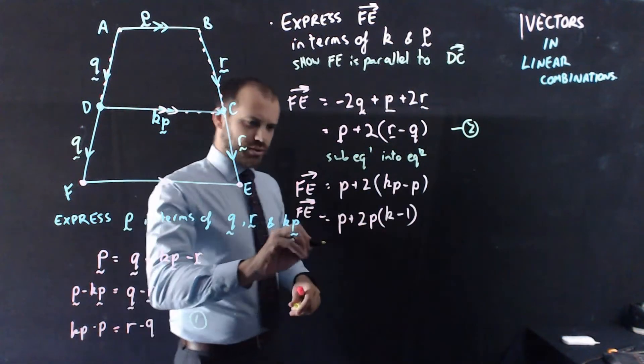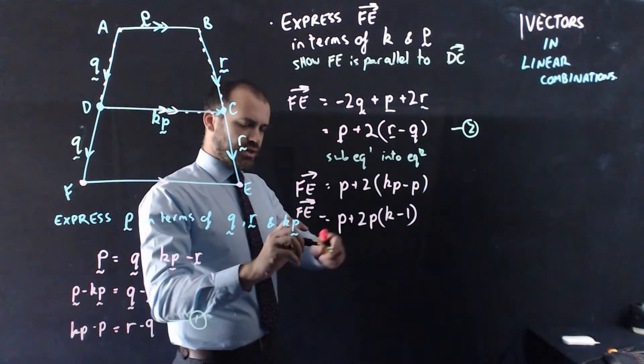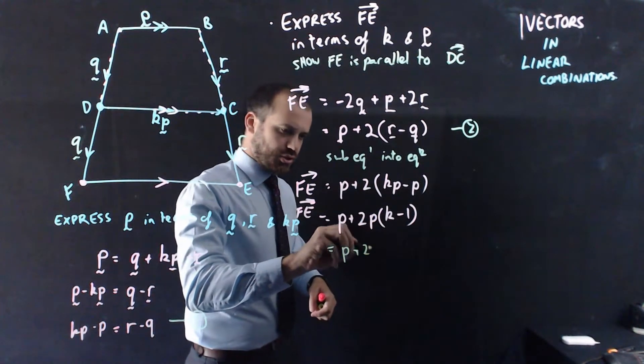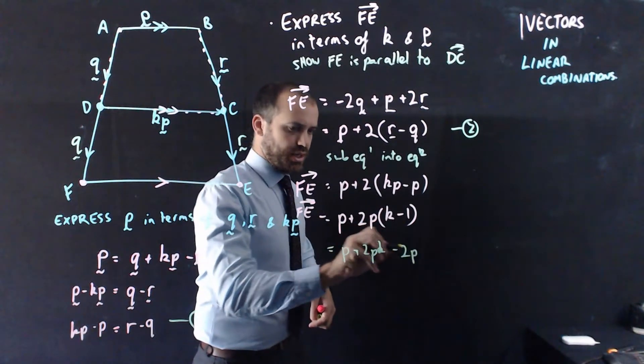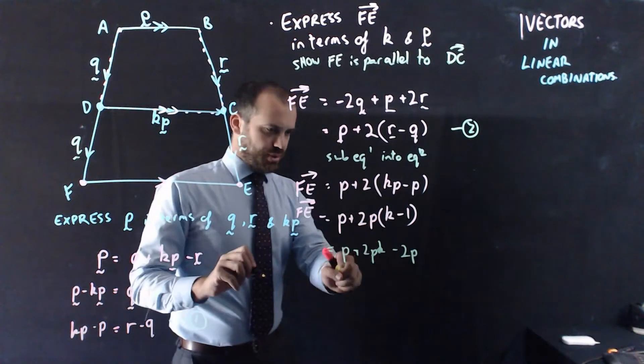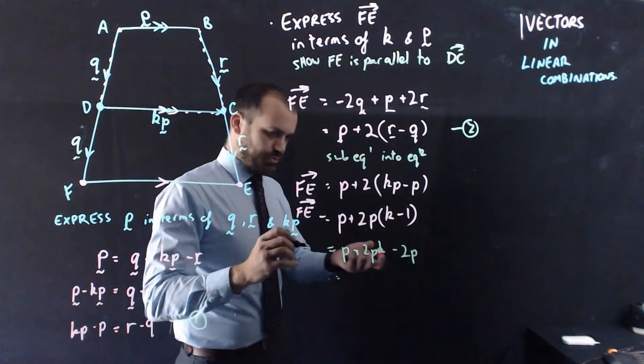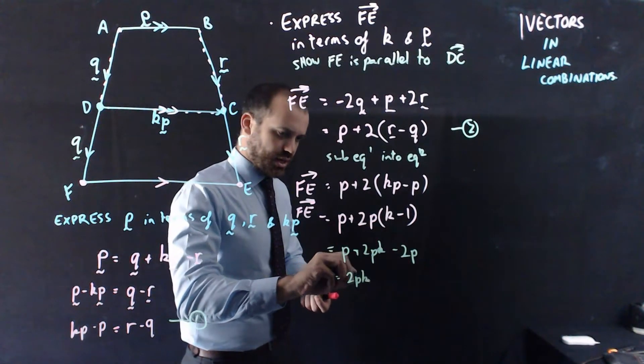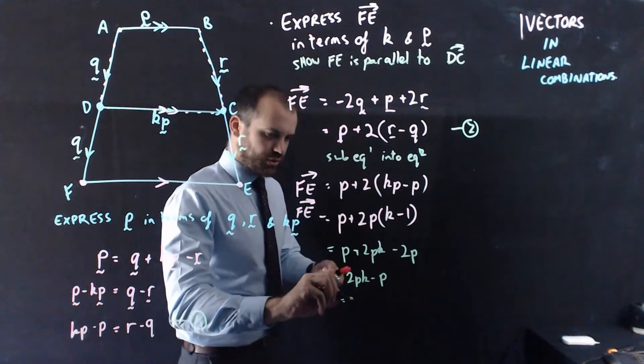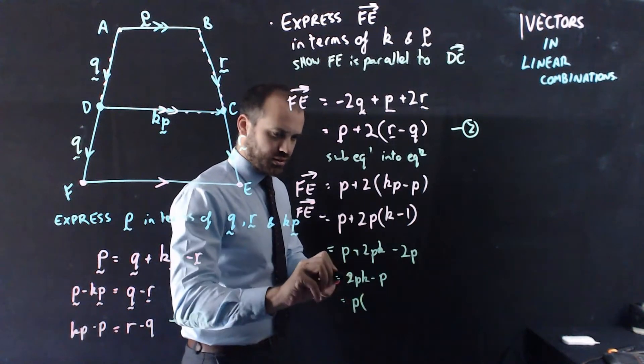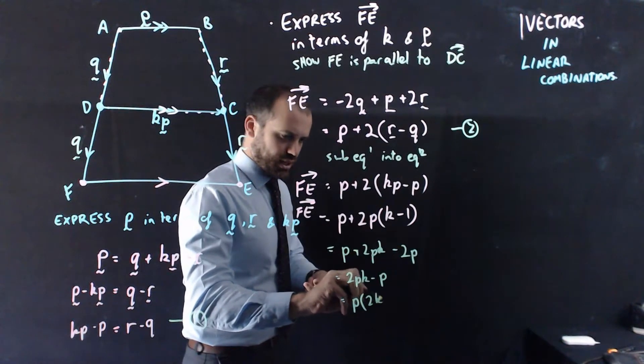Just, it looks sort of a bit funky here. So we can say P plus 2PK minus 2P. P minus 2P is negative P. So now I've got 2PK minus P. And now I've got P bracket 2K minus 1.